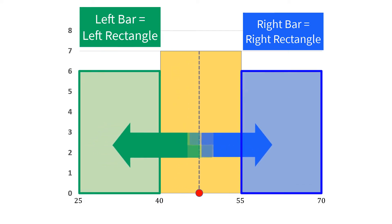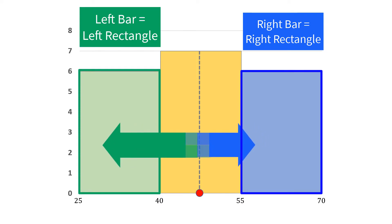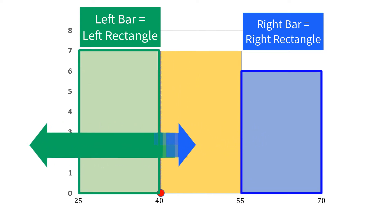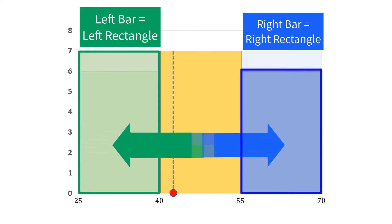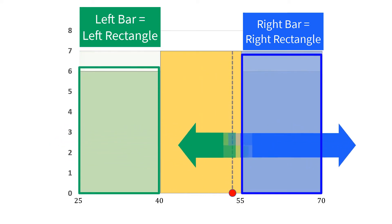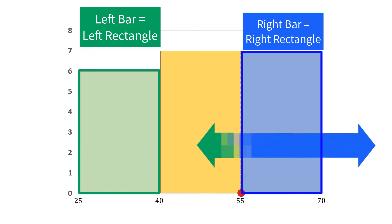If the frequencies of the right bar and left bar are the same, then the vertical line will again shift to the middle of 40 and 55. If the frequency of the left bar is equal to the frequency of the modal class, then the vertical line will shift to 40, and mode equals 40. If the frequency of the right bar is equal to the frequency of the modal class, then the vertical line will shift to 55, and mode equals 55.